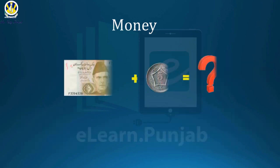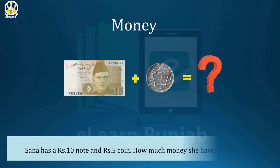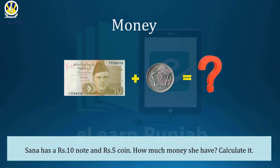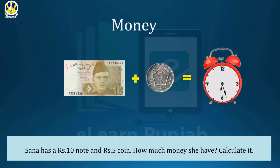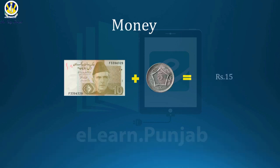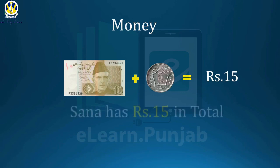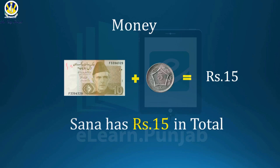Sana has a rupees ten note and a rupees five coin. How much money does she have? Calculate it and write down in your notebooks. Do you know ten plus five is equal to how many rupees? After calculation, the answer is rupees fifteen. Sana has rupees fifteen in total.